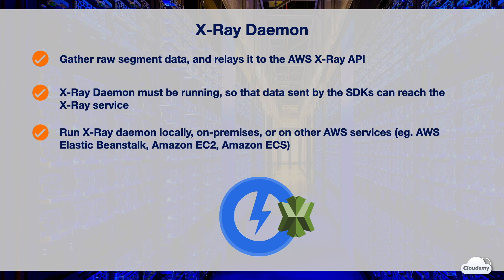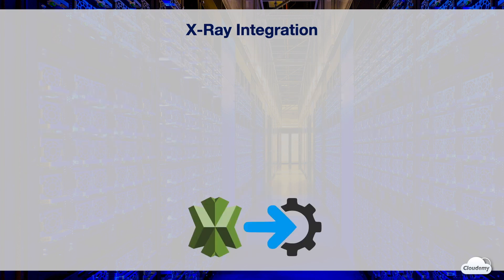You can configure the X-Ray daemon to automatically run on EC2 instances in your Elastic Beanstalk environment, or run the X-Ray daemon on EC2 instances directly. The X-Ray daemon is supported by Amazon Linux and Windows servers. You can also create a Docker image that runs the X-Ray daemon, upload it to a Docker image repository, and deploy it to your ECS cluster.